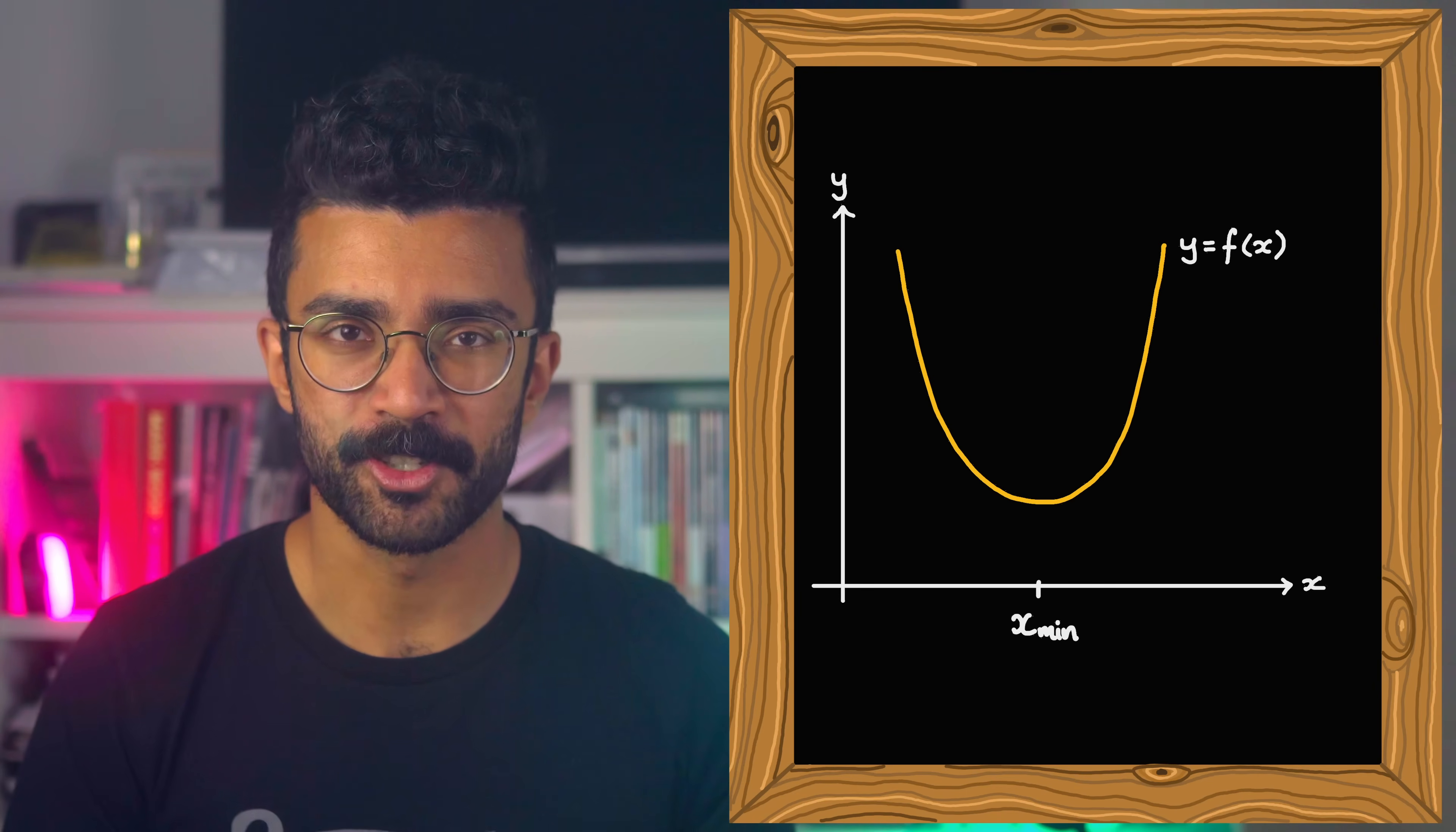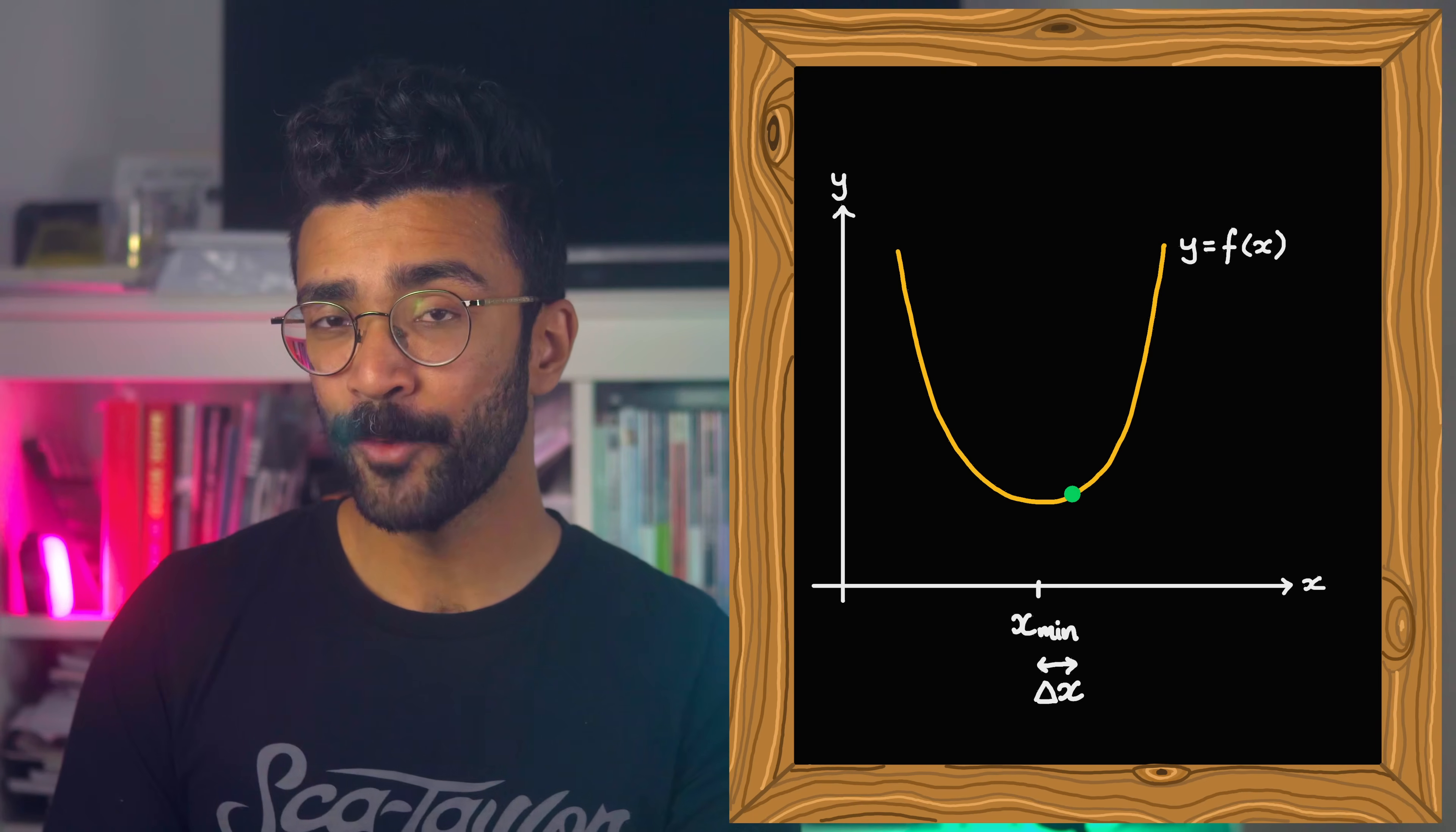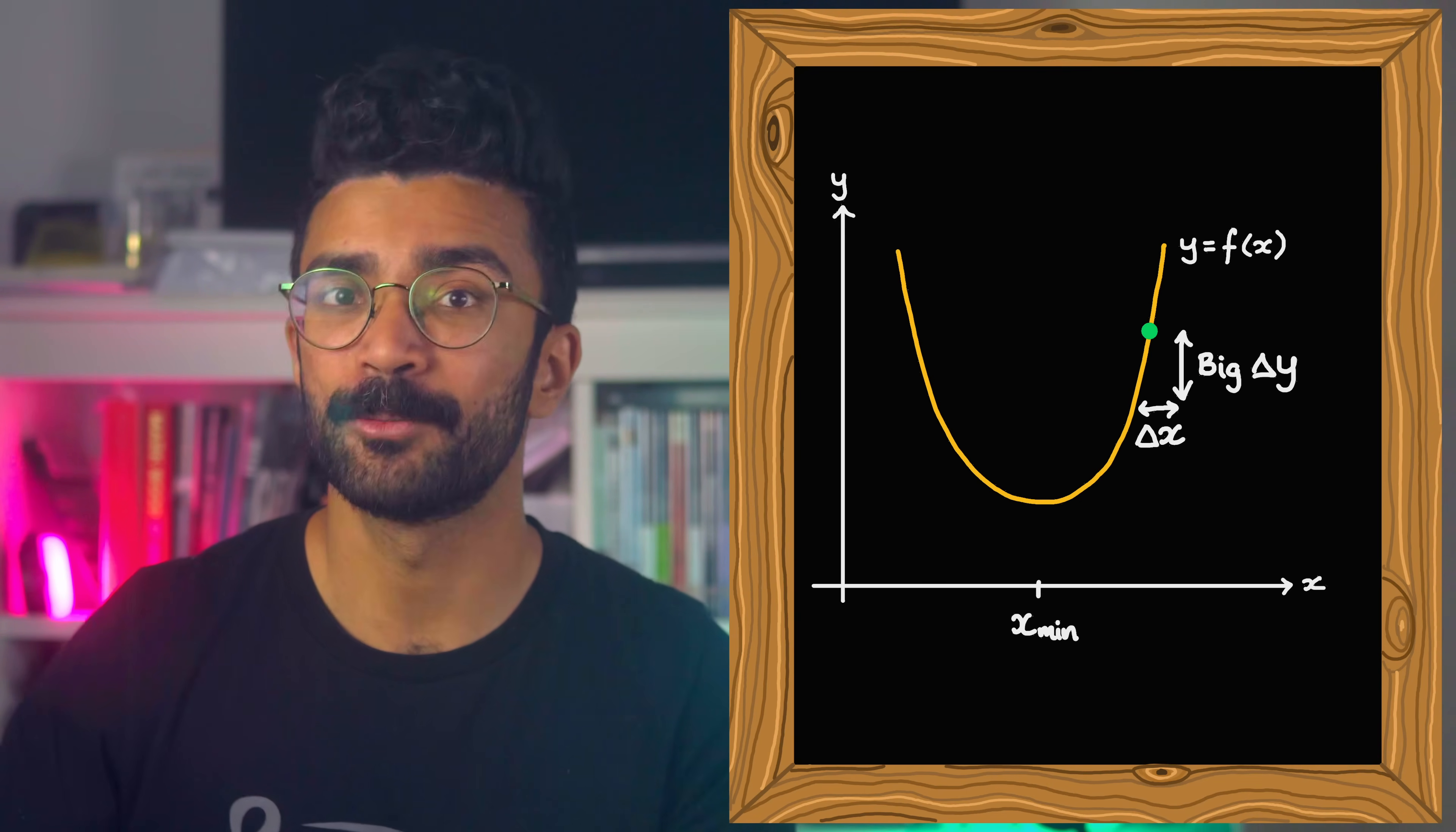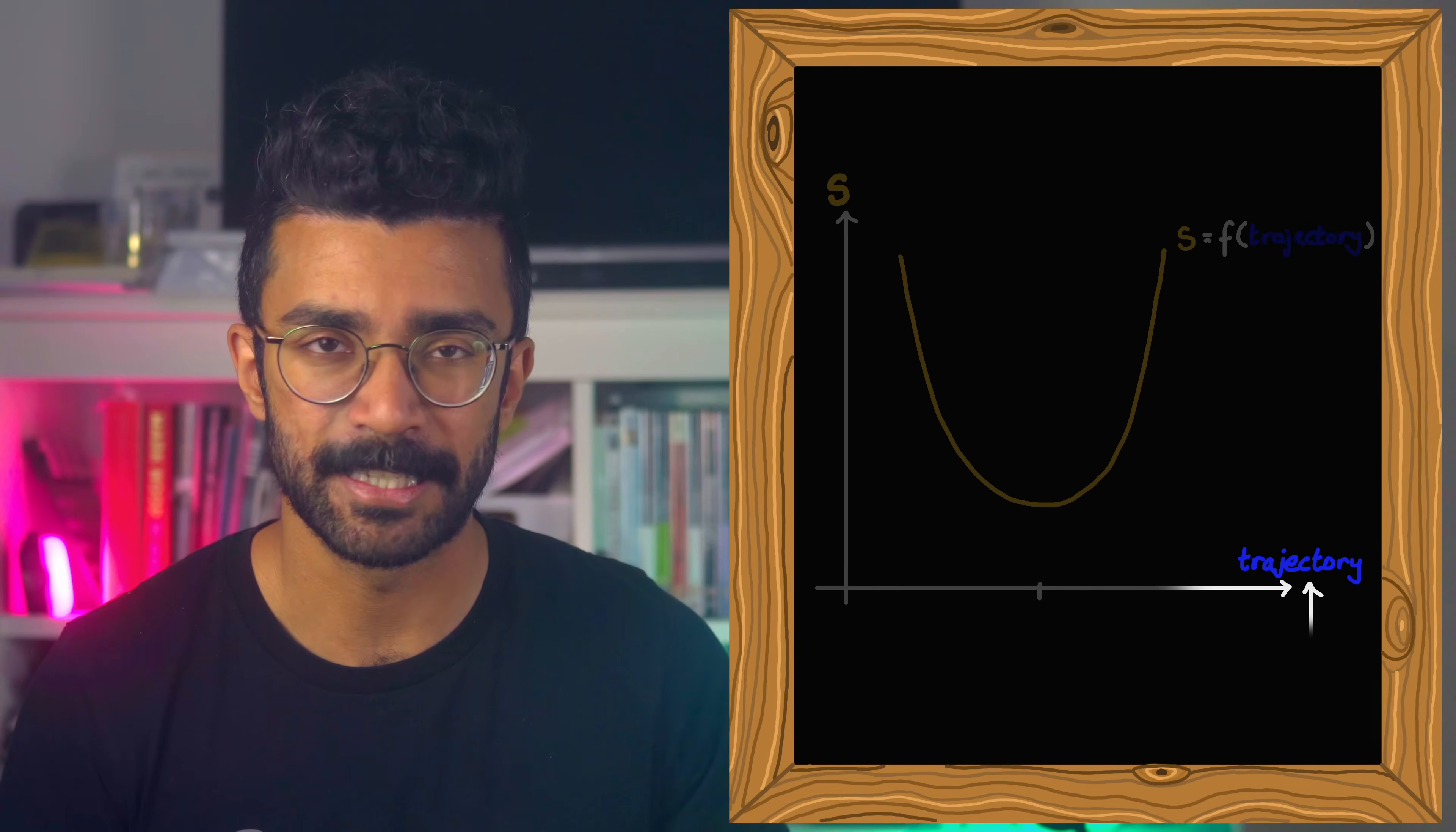This is like if we have some function y that depends on x, and it has a minimum value, and then if we changed x slightly, the value of y would still be very close to the minimum, it wouldn't change a huge amount. Whereas if we were elsewhere, changing x would result in a noticeable change in y. Same idea here, except this is kind of like the value of s, and this is representing the trajectory.